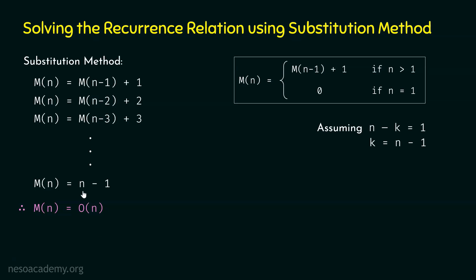We can verify this result. To calculate factorial of 5: 5 × 4 × 3 × 2 × 1 — there are 4 multiplications, which is 5-1. For factorial of 6: 6 × 5 × 4 × 3 × 2 × 1 — there are 5 multiplications, which is 6-1. It is clear that to calculate n factorial, we need n-1 multiplications. This confirms we have solved the recurrence relation correctly.